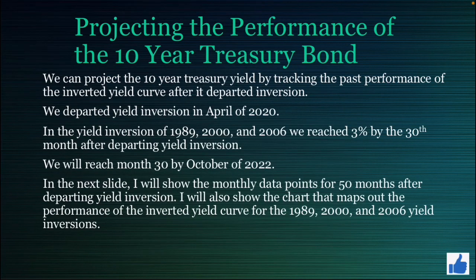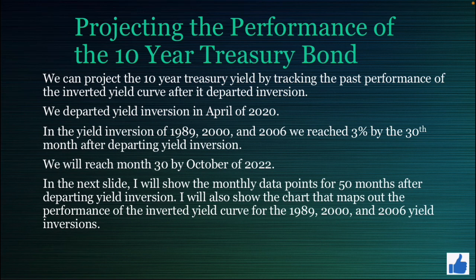The inverted yield curve can be helpful in projecting the 10-year treasury bond yield. We can project the 10-year treasury bond yield by tracking past performance of the inverted yield curve after it departed inversion. We departed inversion in April 2020. In the yield inversions of 1989, 2000, and 2006, we reached 3% by the 30th month after departing yield inversion. We will reach month 30 by October of 2022. I will show the monthly data points for 50 months after departing yield inversion, as well as the chart mapping the performance for the 1989, 2000, and 2006 yield inversions.